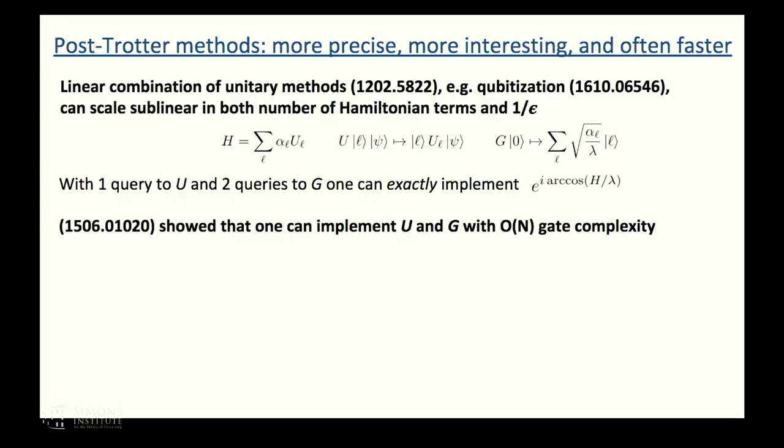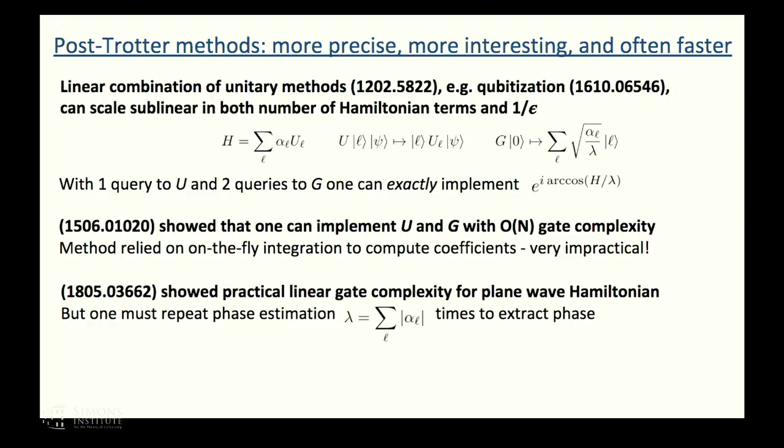One of the circuits acts on this register that indexes the number of terms in the Hamiltonian as well as on psi, and it selectively applies one of the terms in the Hamiltonian to psi controlled on L. The other one creates some state on this ancilla register, a superposition weighted by the coefficients of the terms in the Hamiltonian, and there's some normalization factor lambda. The general result of cubitization essentially is that with one query to this circuit and two queries to this circuit, one can create a quantum walk which realizes this operator. The real question is how do you implement U and G for chemistry? We had a paper with Dominic Berry three years ago where we did show that one could implement U and G both with linear gate complexity, but our method of implementing G, the state preparation thing, was really just for fun. It was highly impractical because it involved computing the integrals defining the Galerkin discretization on the fly.